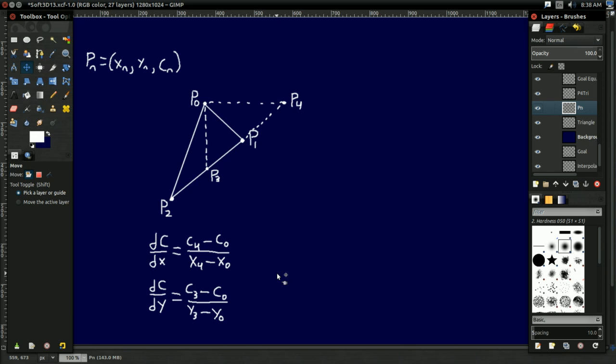And it's really that simple. So all we have to do now is determine the appropriate information for P4 and P3. And we will have an equation to calculate the gradients for our interpolant on X and our interpolant on Y.